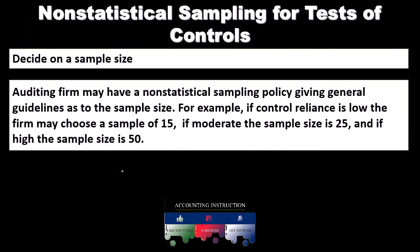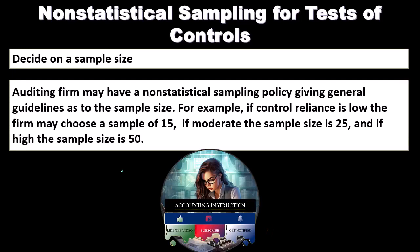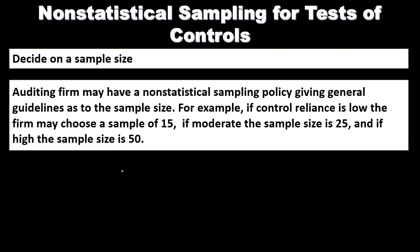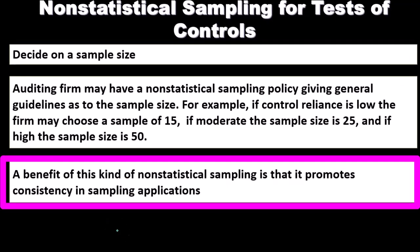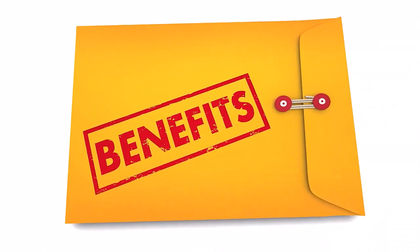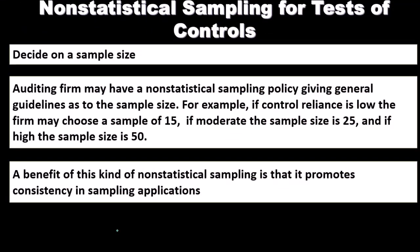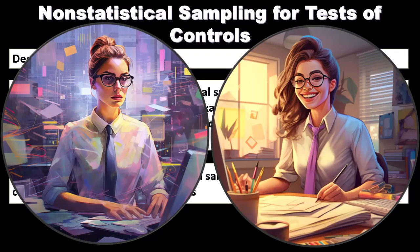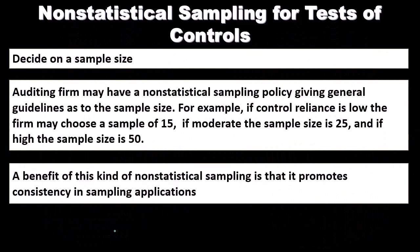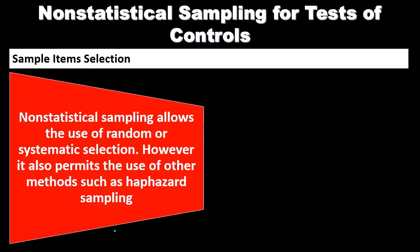We might have a grid that shows us the total population and gives us the sample size we would take from it in our non-statistical sampling method. A benefit of this kind of non-statistical sampling is that it promotes consistency in sampling applications. Although it's not statistical and not as precise in terms of calculation, it will be more consistent because we simply look at the chart and apply the sample sizes in accordance with the established set of rules.